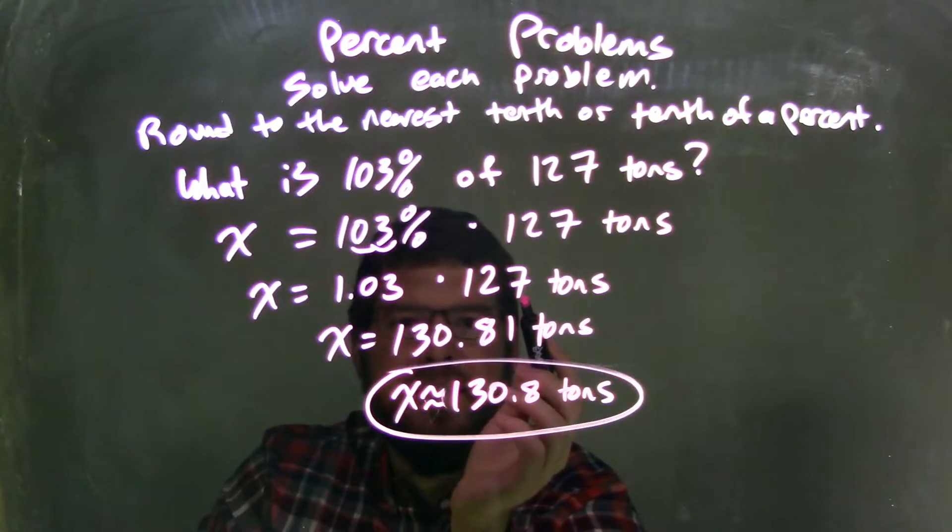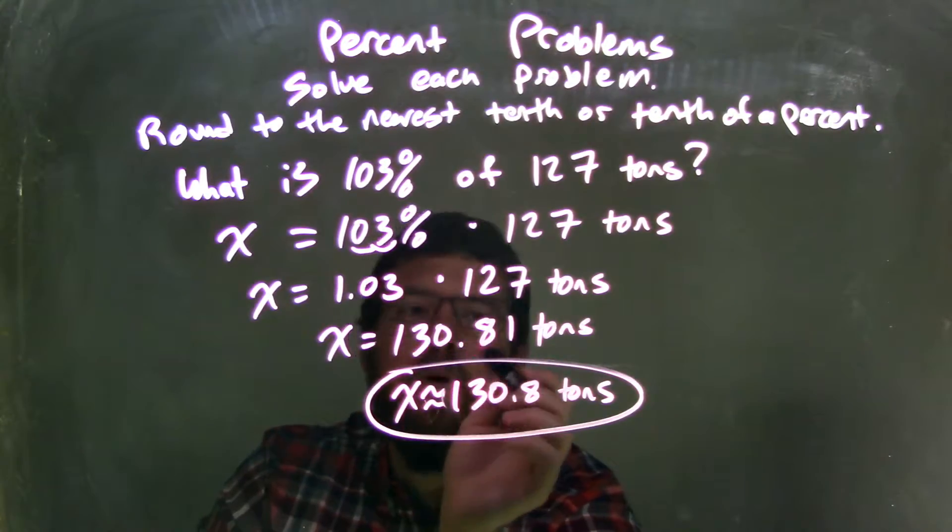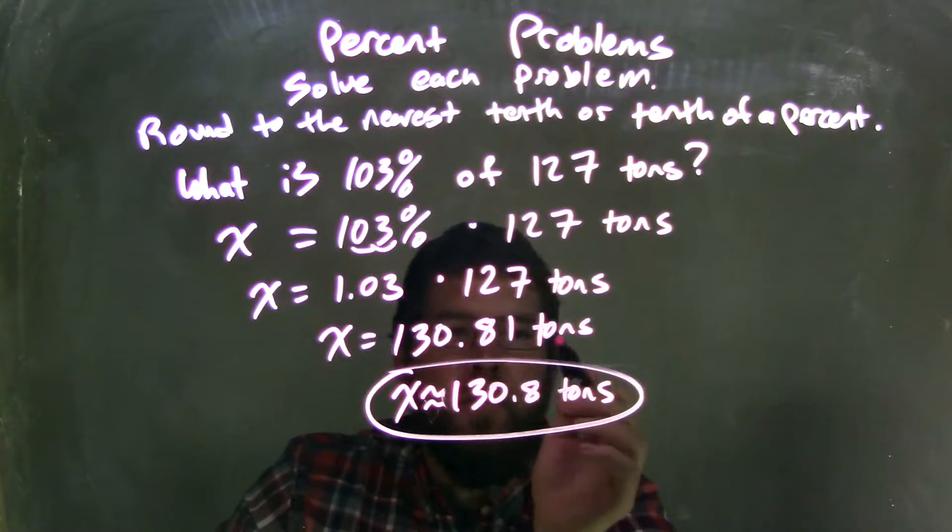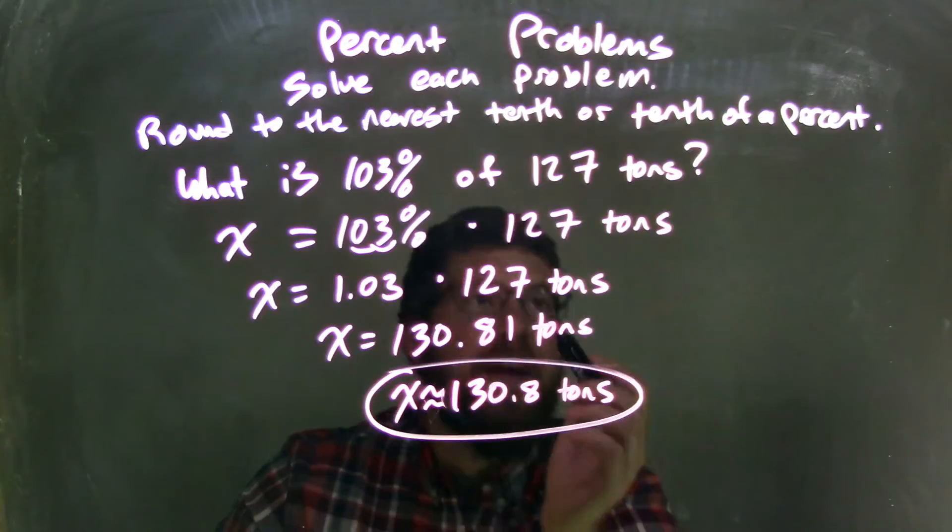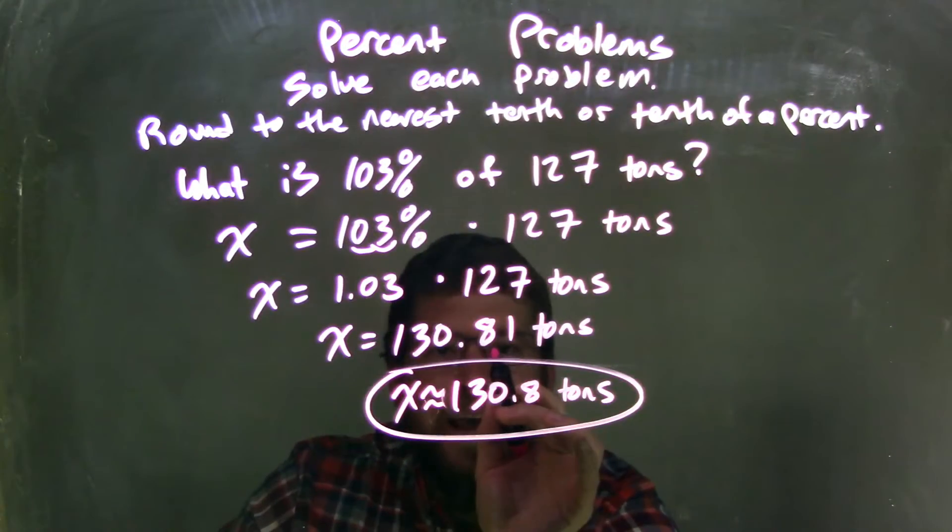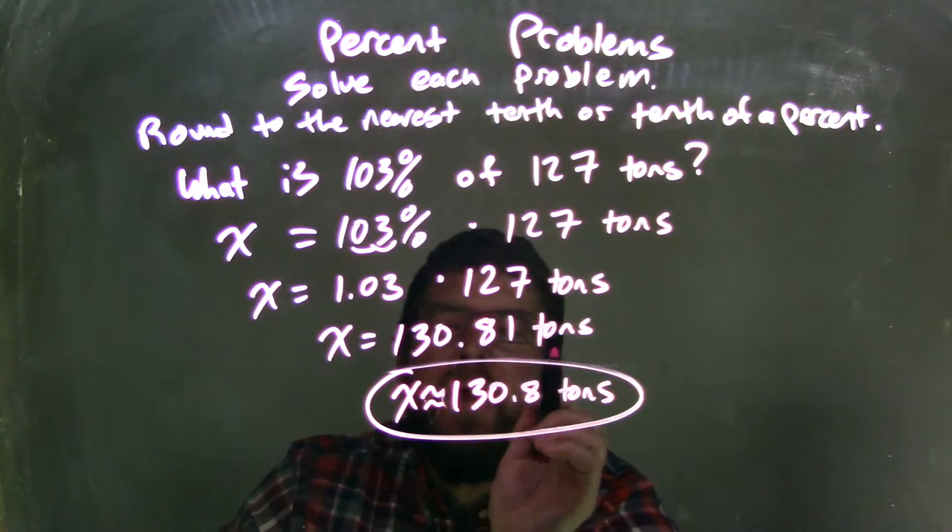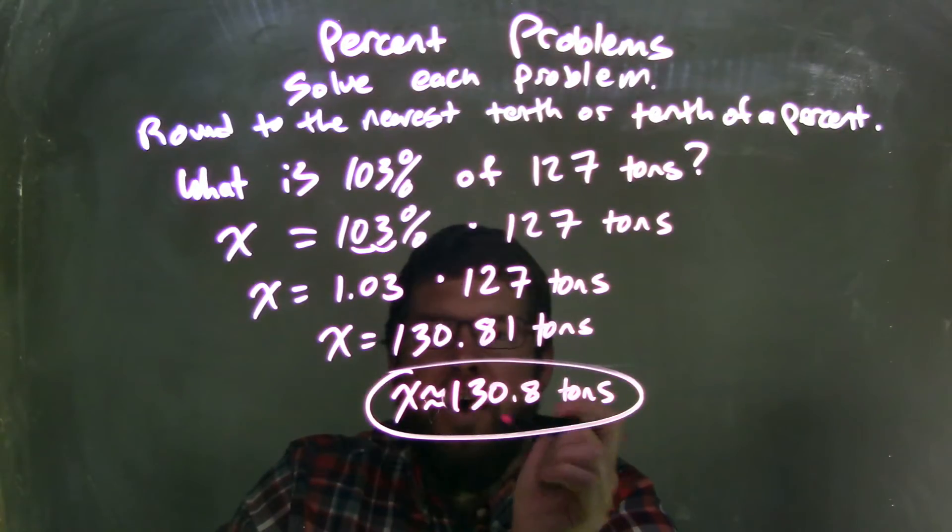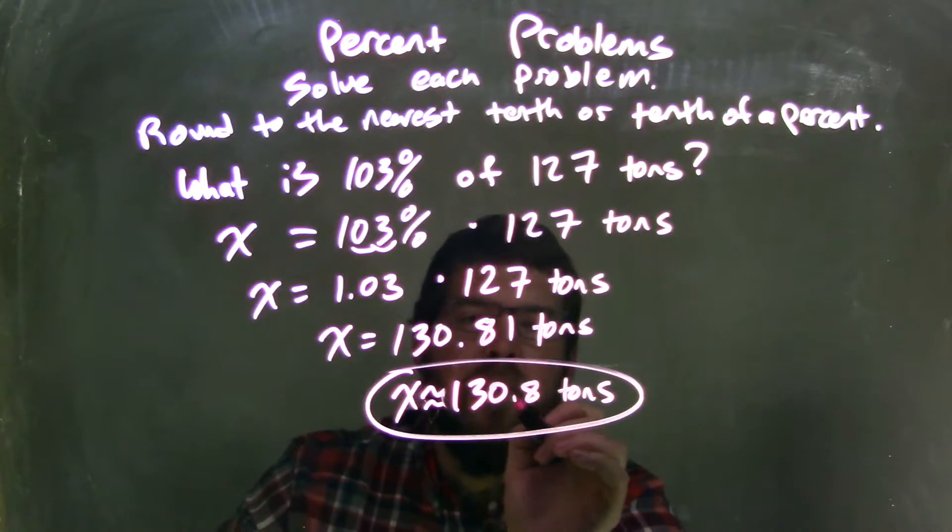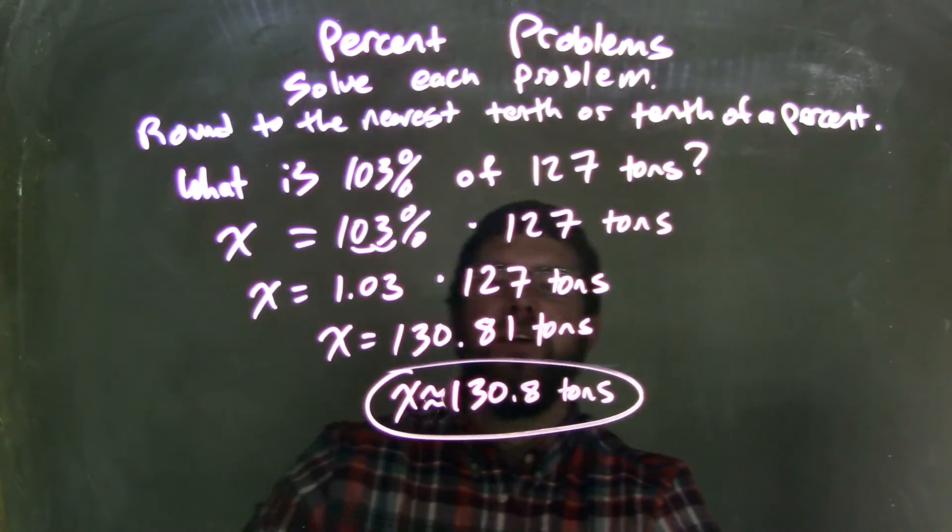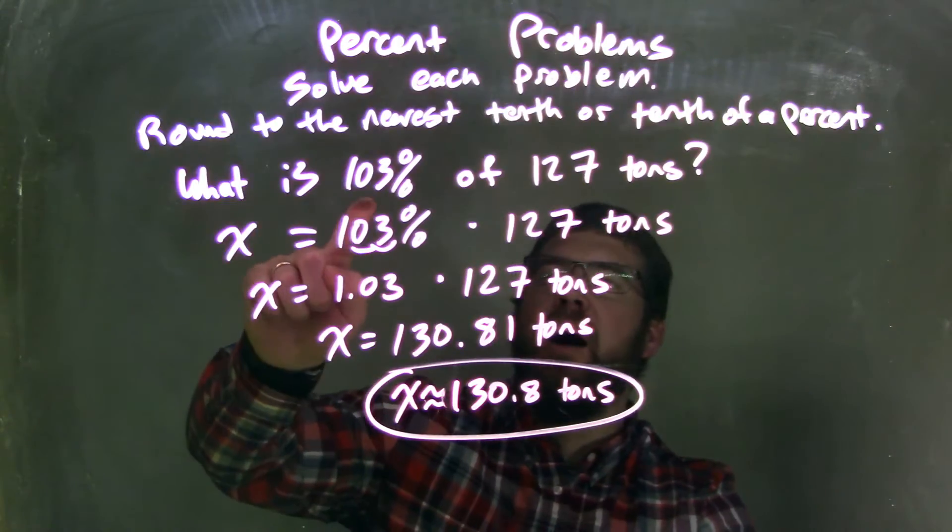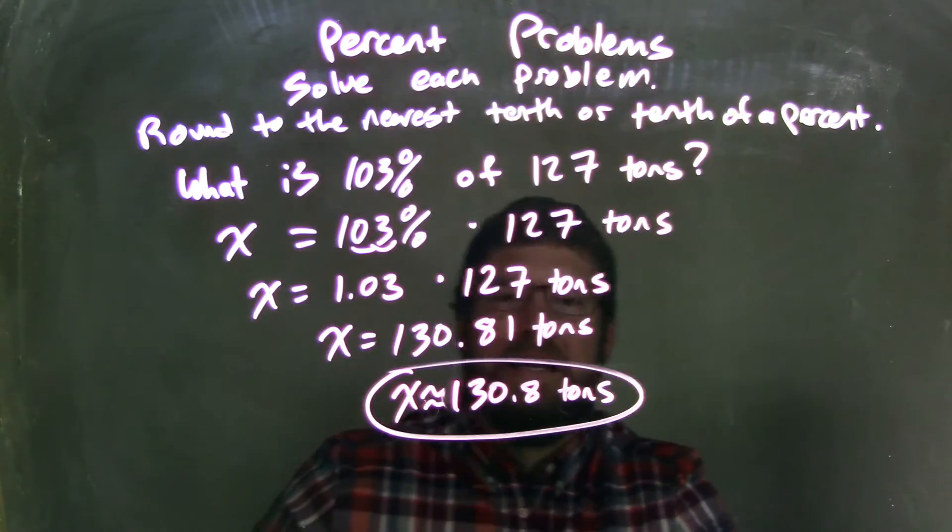Then I converted 103% to 1.03 as a decimal. I multiplied that by 127 in my calculator and got 130.81 tons as an exact answer, but I had to round to the nearest tenth. Looking at the 1 after the 8, the 1 causes the 8 to stay where it is. So my final answer is x is approximately equal to 130.8 tons. 130.8 tons is 103% of 127 tons.